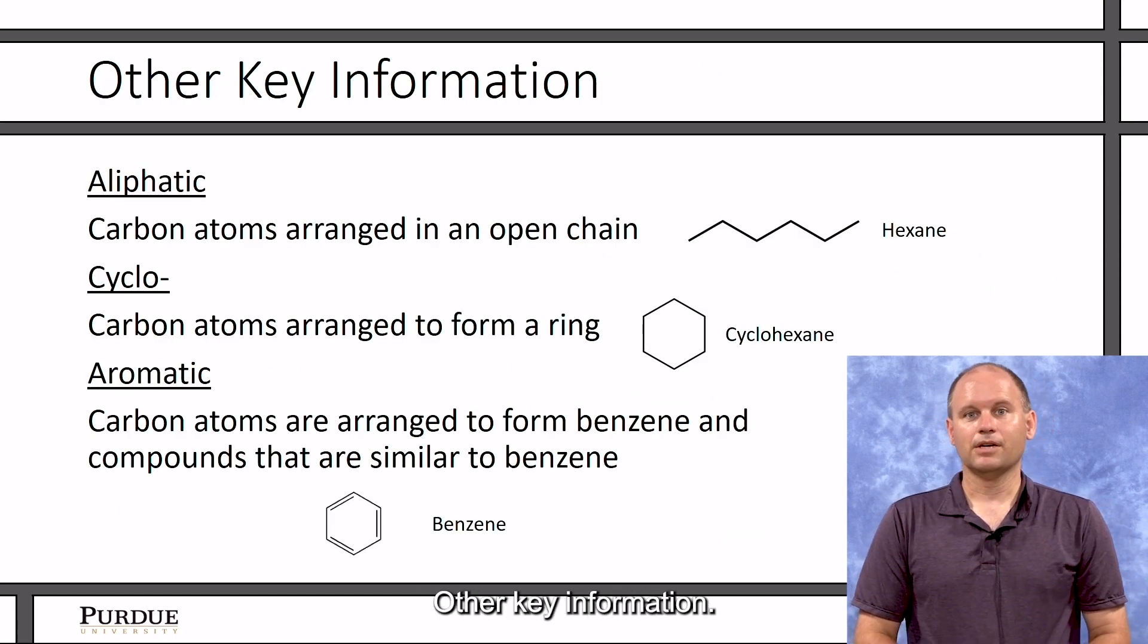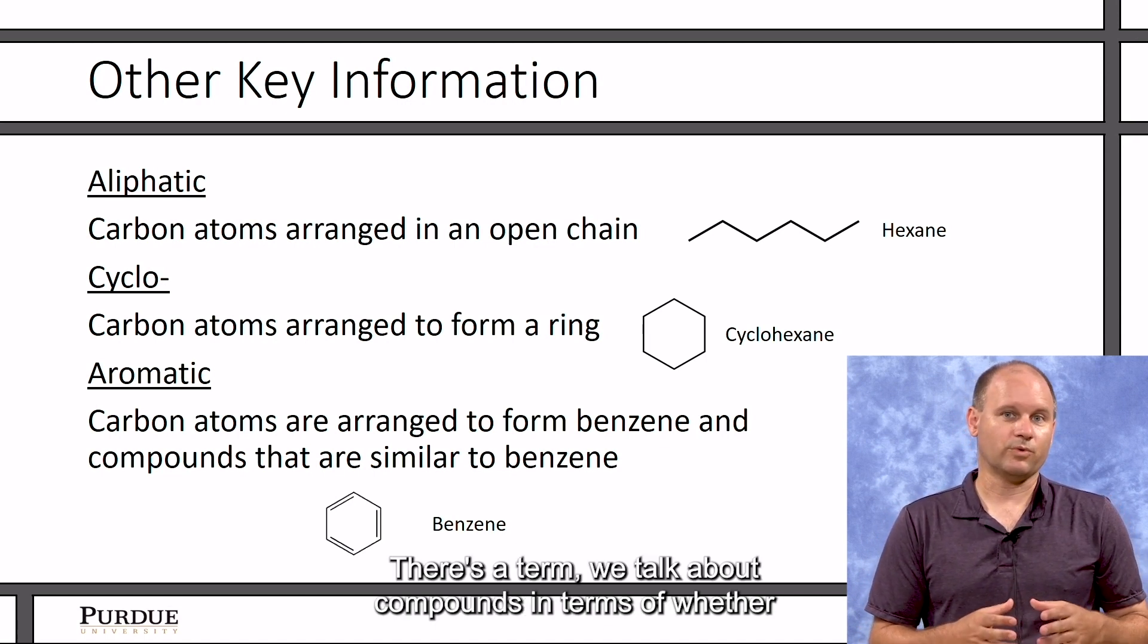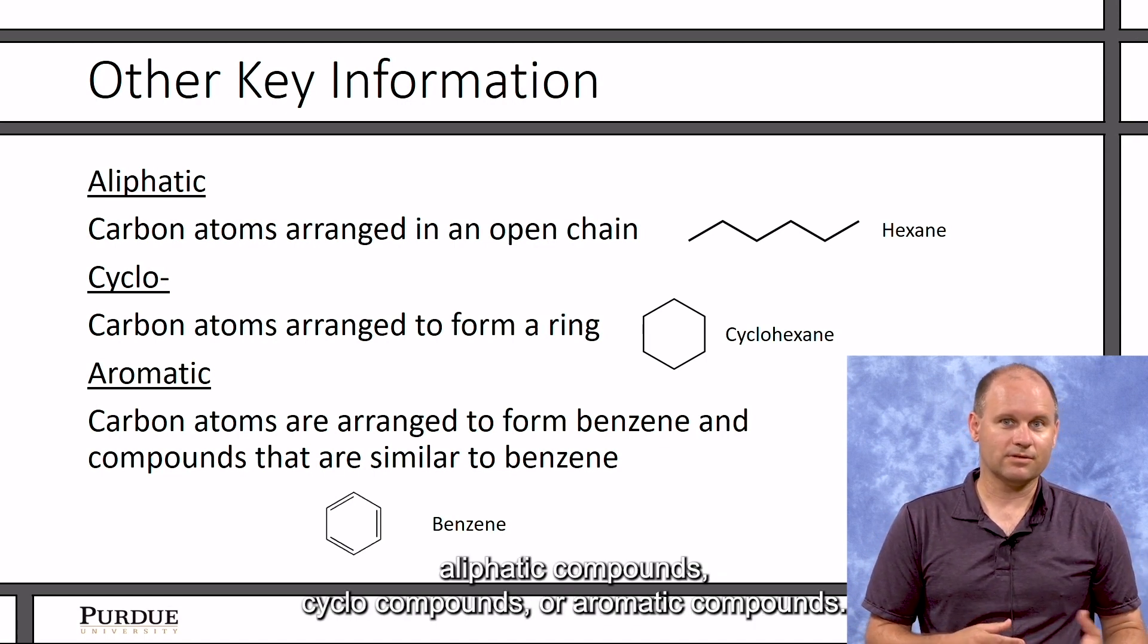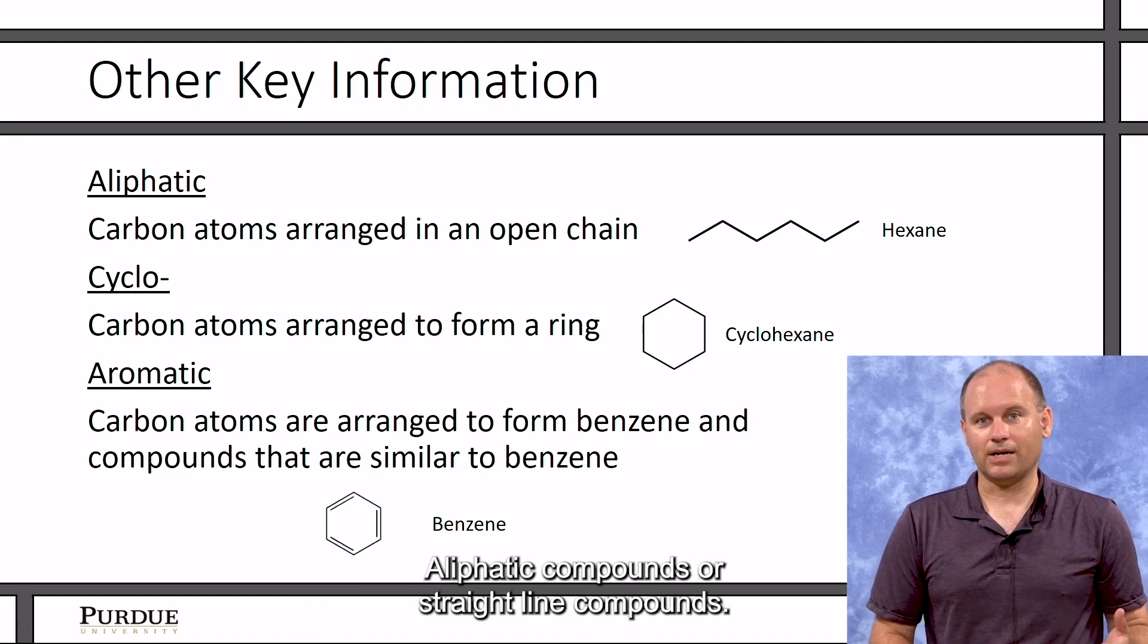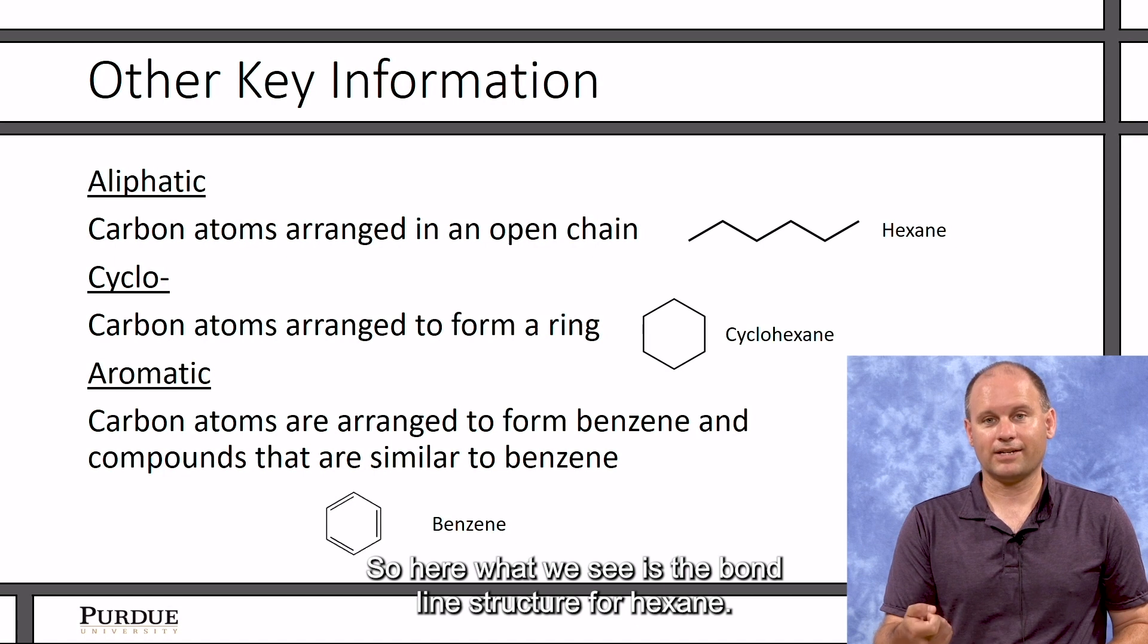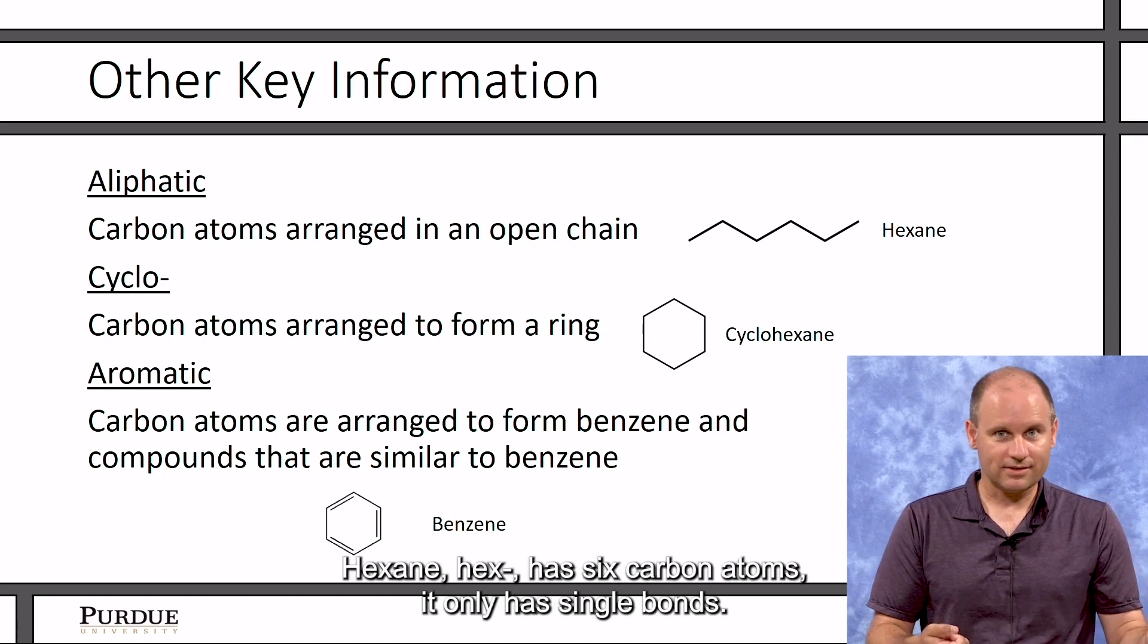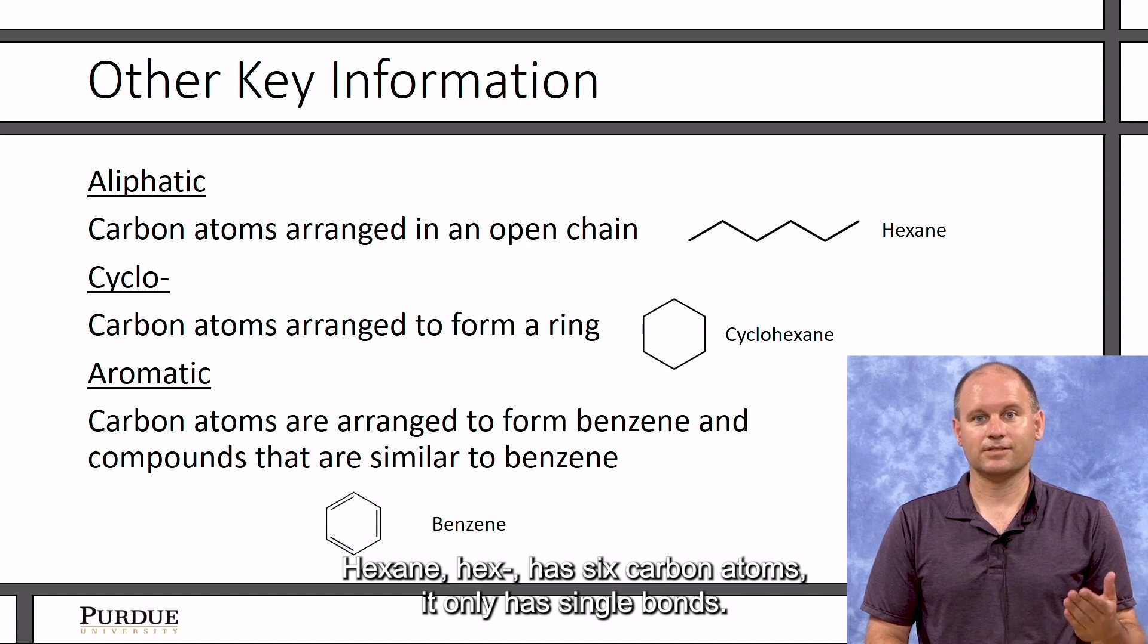Other key information. There's a term—we talk about compounds in terms of whether they're aliphatic compounds, cyclocompounds, or aromatic compounds. Aliphatic compounds are straight line compounds. So here what we see is the bond line structure for hexane. Hexane—hex—has six carbon atoms and it only has single bonds.